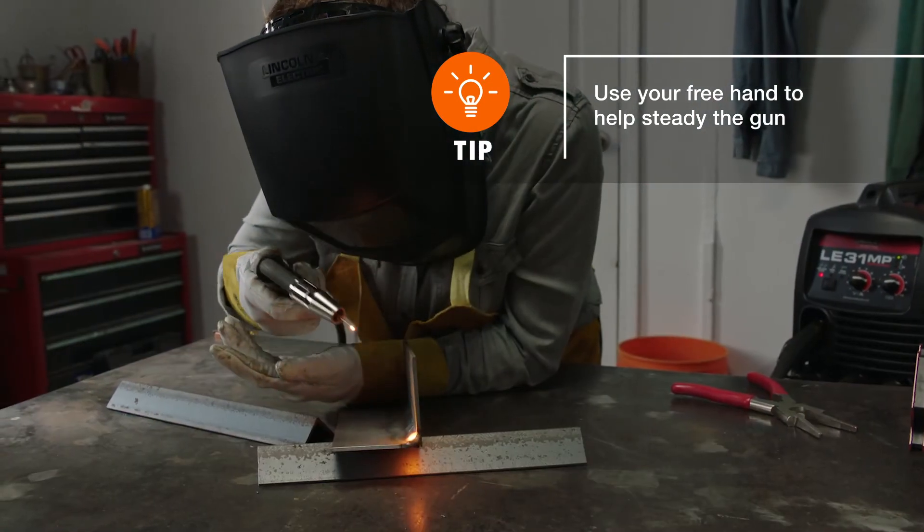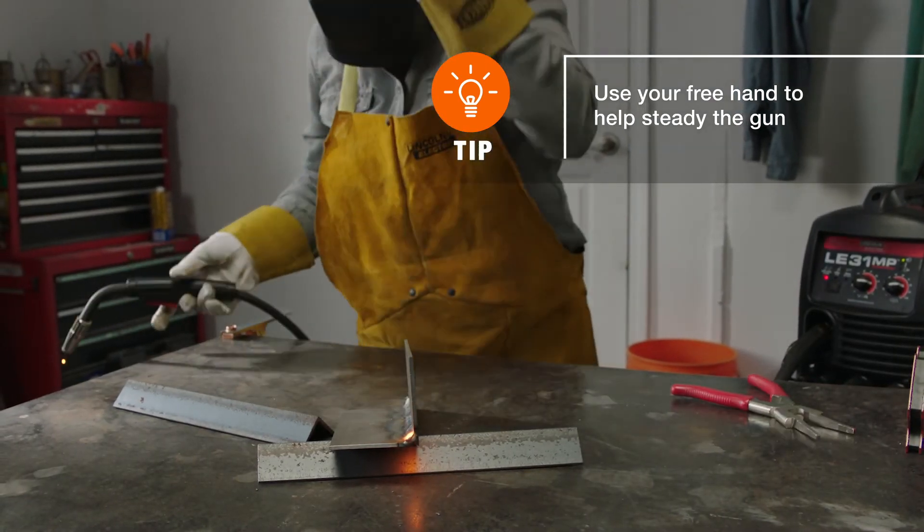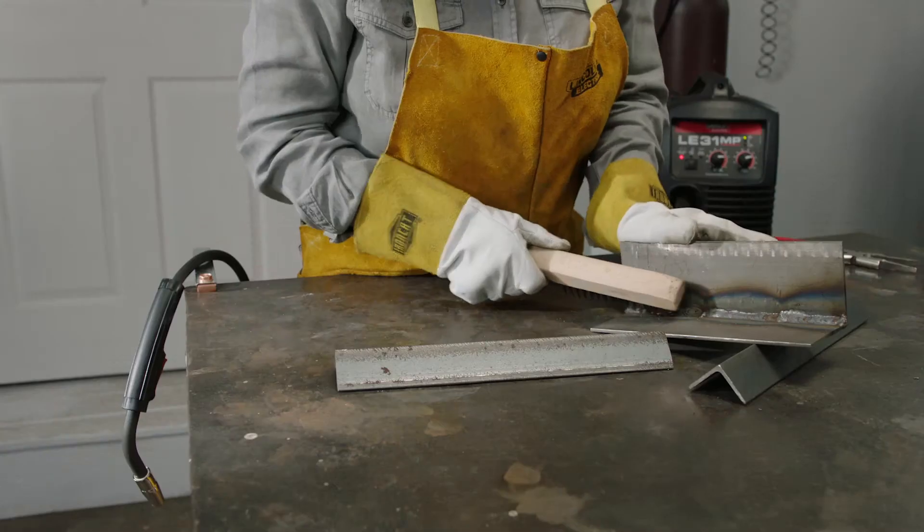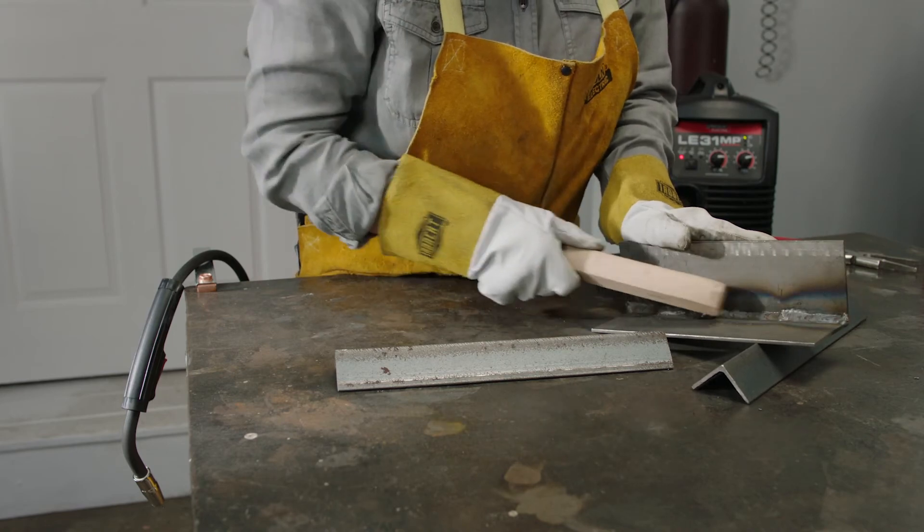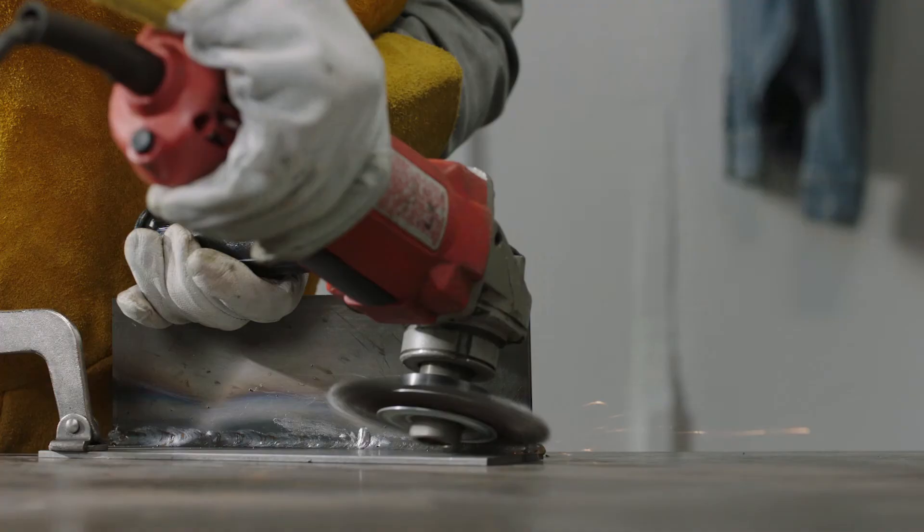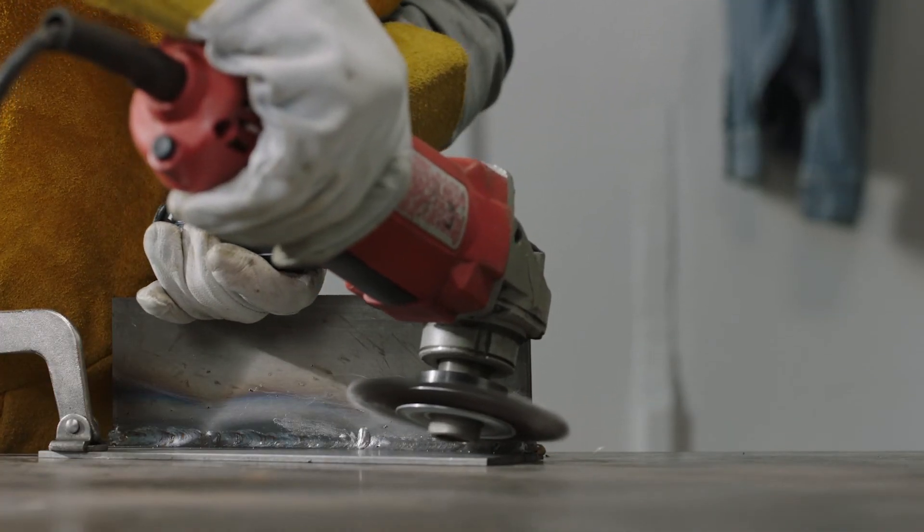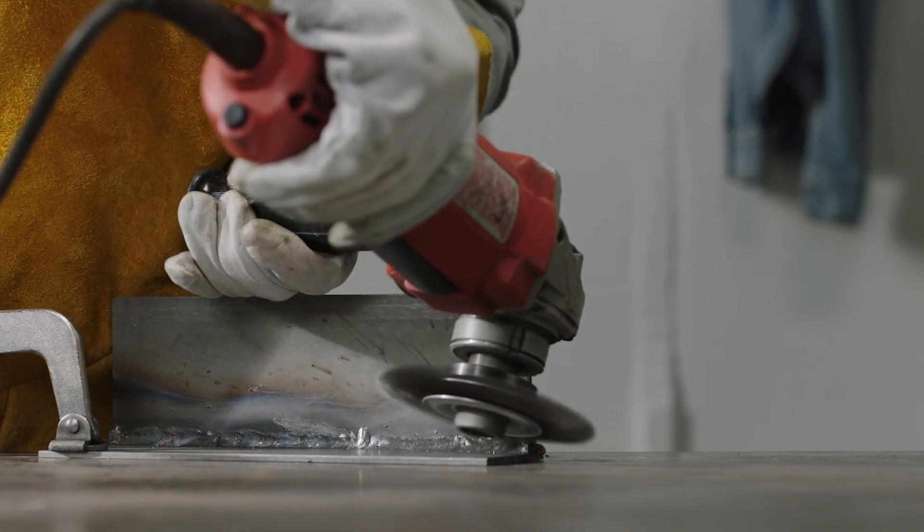The weld cures in just a few seconds. Use gloves to handle until the metal has cooled. For a cleaner look, remove slag using a wire brush and buff using a grinder with wire brush attachment, making sure the base metal is securely clamped to your work surface.